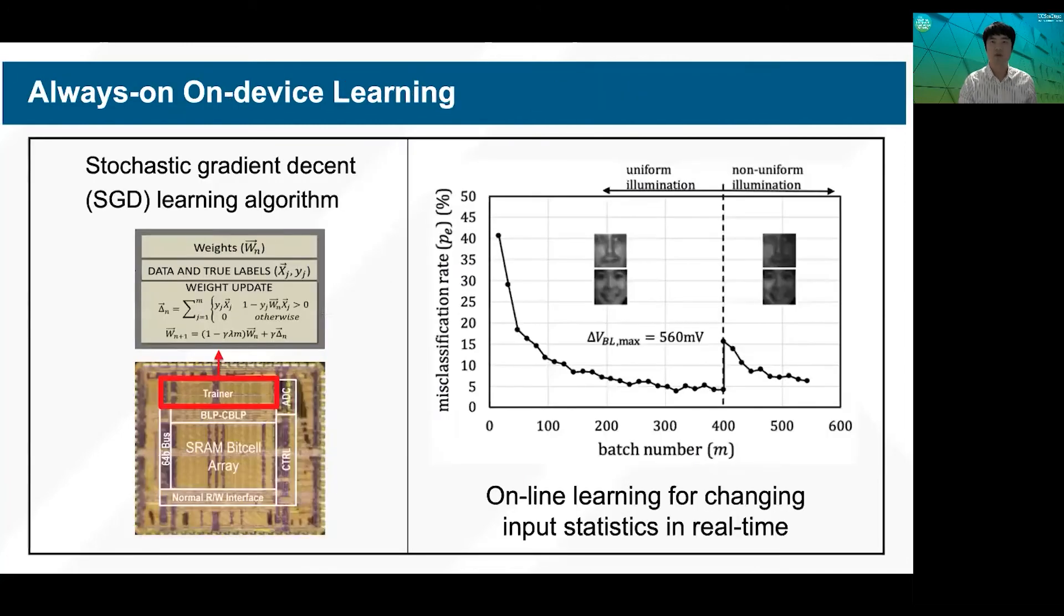We are also looking for algorithmic innovation to enable always-on on-chip learning to adapt for the temperature and voltage fluctuations and even real-time changing input patterns in the highly resource-constrained mobile platforms.